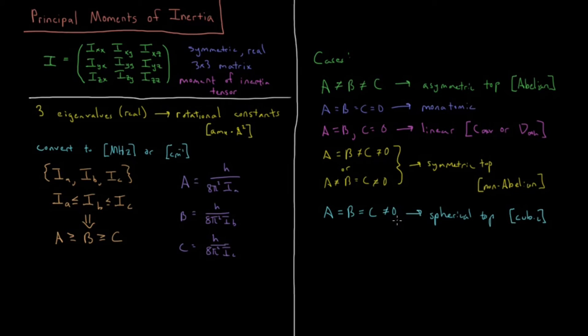For cases where we have an asymmetric top, if we take our moment of inertia tensor, that defines a unique orientation of the molecule. We can actually translate to the center of mass and rotate our molecule such that the moment of inertia tensor is diagonal, and that will give us a unique orientation for an asymmetric top molecule.